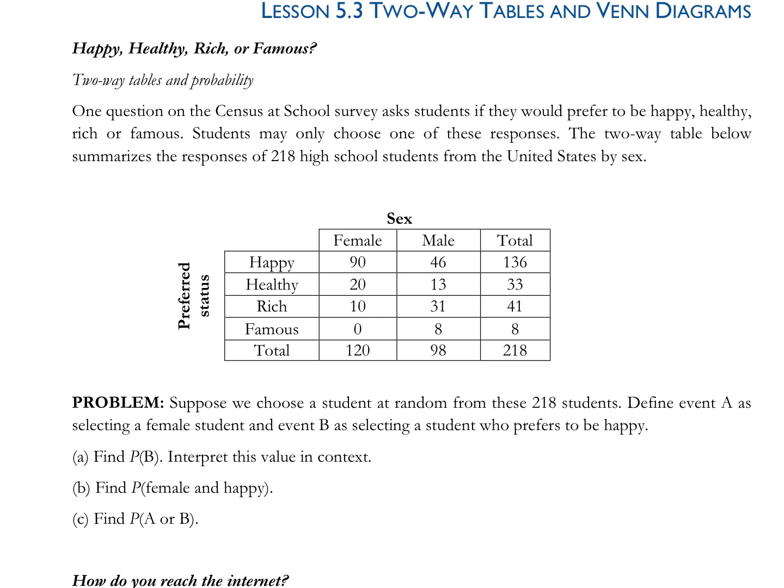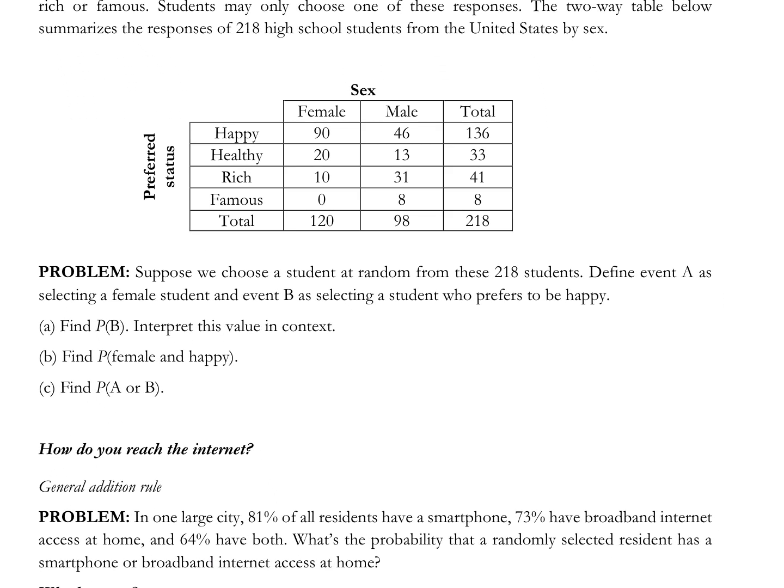Find the probability of B. Find the probability of someone saying I choose happy. How many students said I choose happy? 136, right? When you are given a single event in the probability, you are looking at the totals. So I add 136 out of how many? 218.